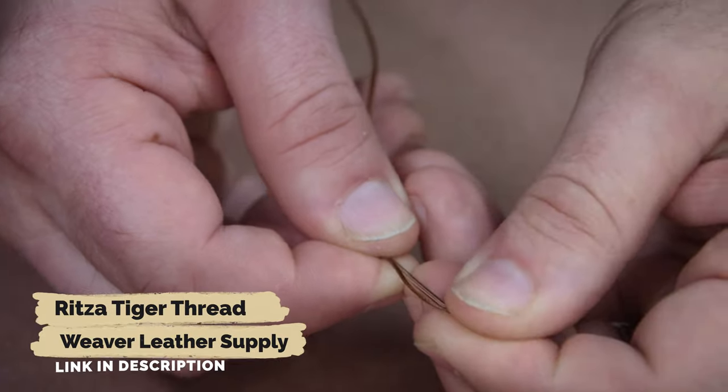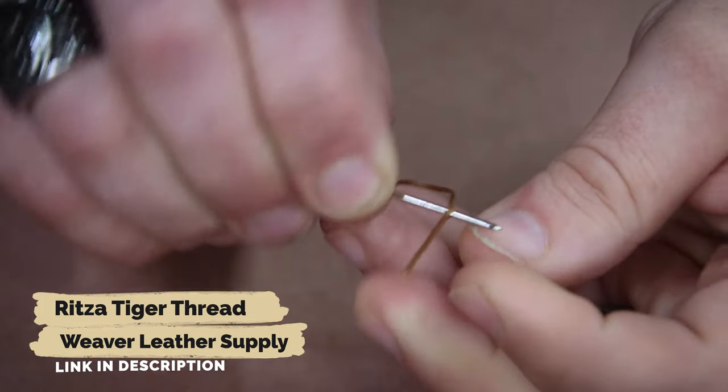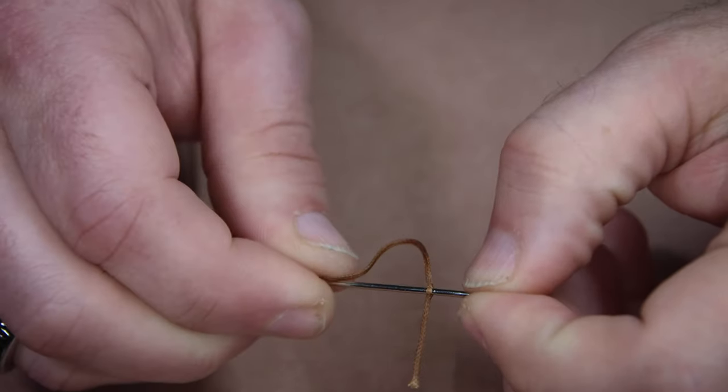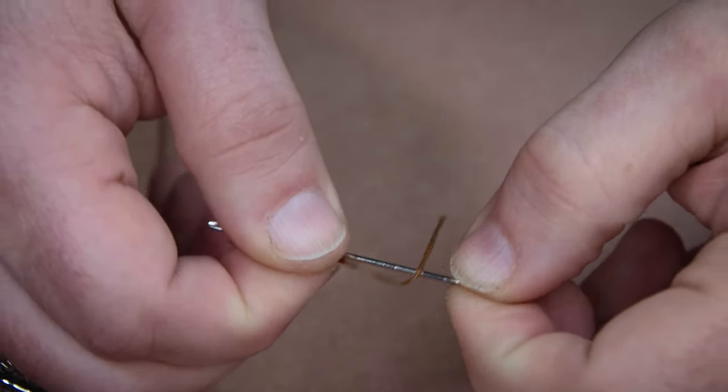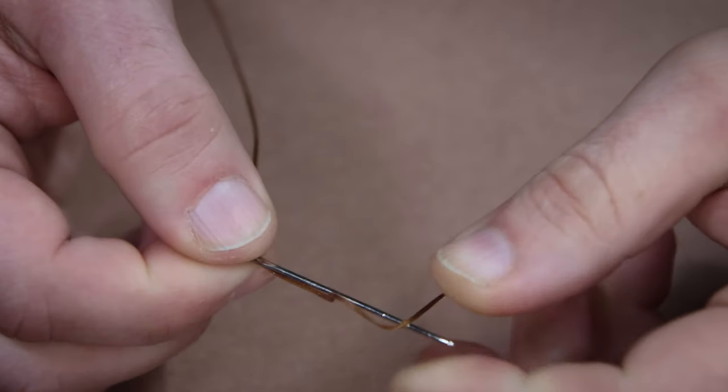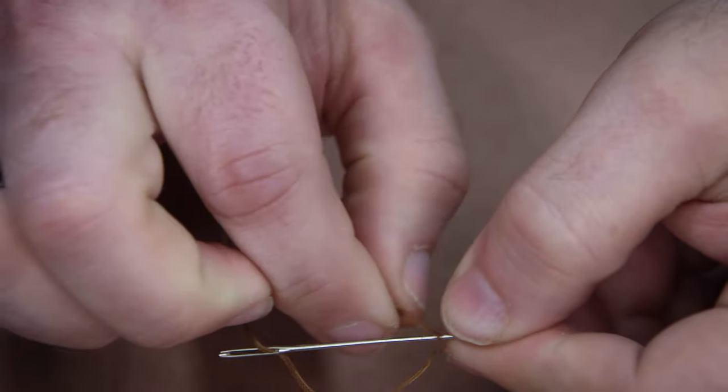We're going to start by threading our needle, then locking it off by piercing the thread, and then pulling that tail back up and over the end of the needle. After that, I'm just going to tie a knot in the other end of the thread.